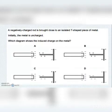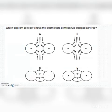Next question: A negatively charged rod is brought close to an isolated T-shaped piece of metal. Initially the metal is uncharged. With the given diagrams, the induced charge on the metal — options A, B, C, or D — the correct option is A.